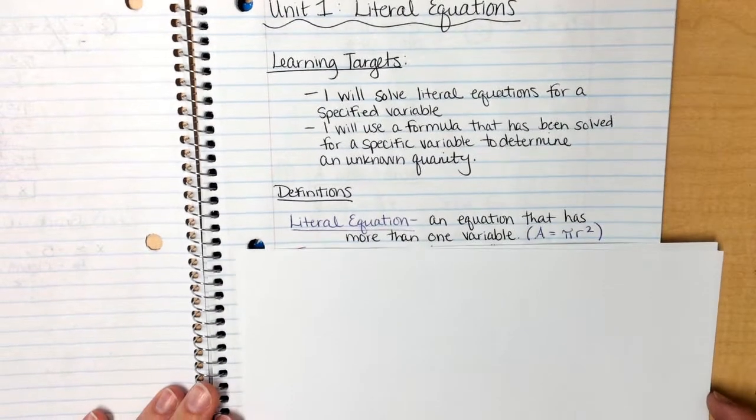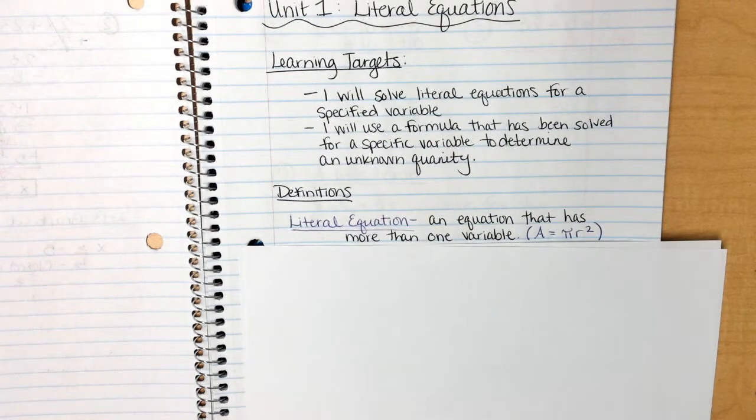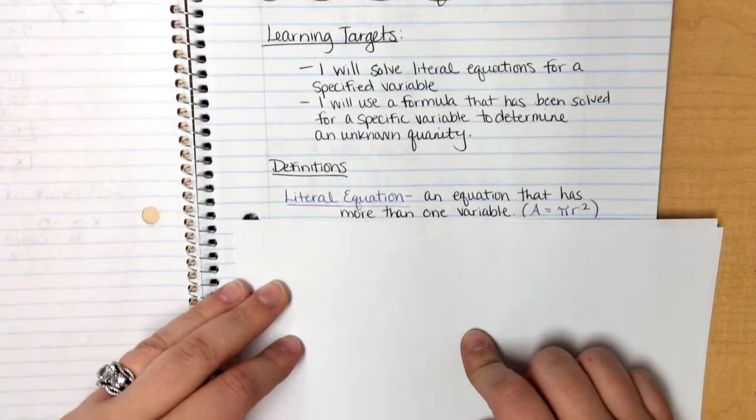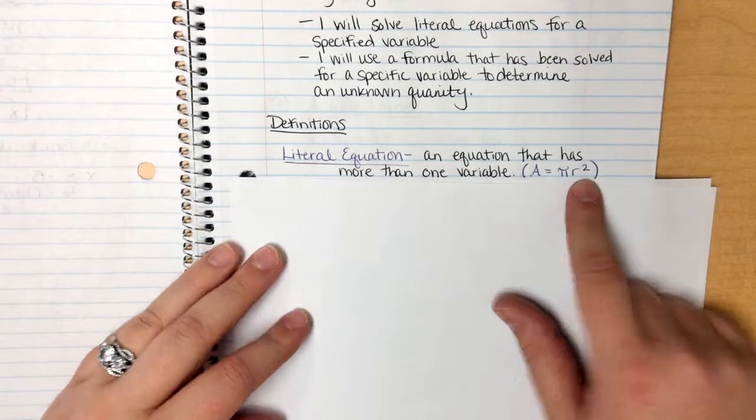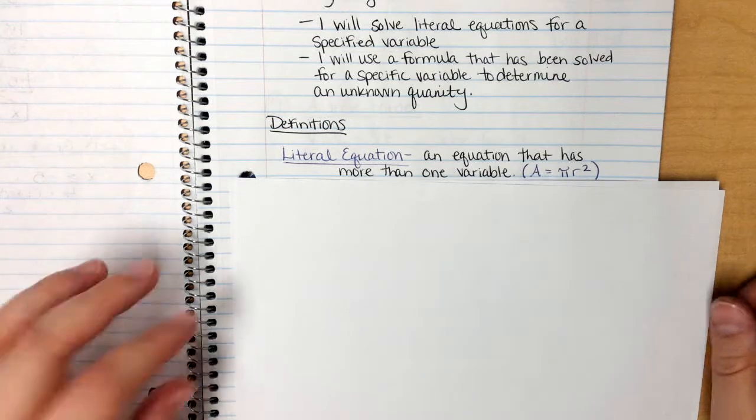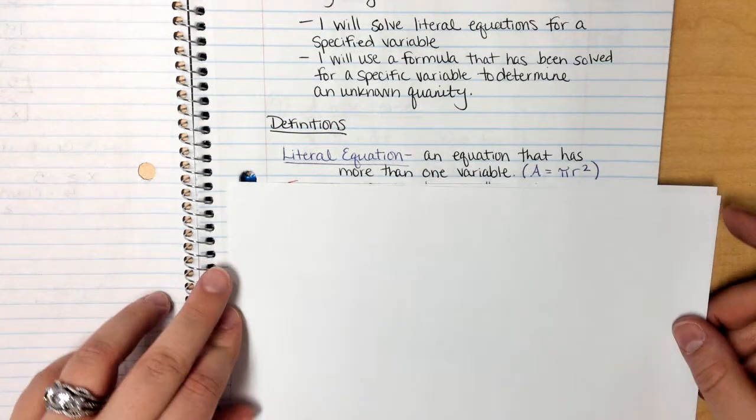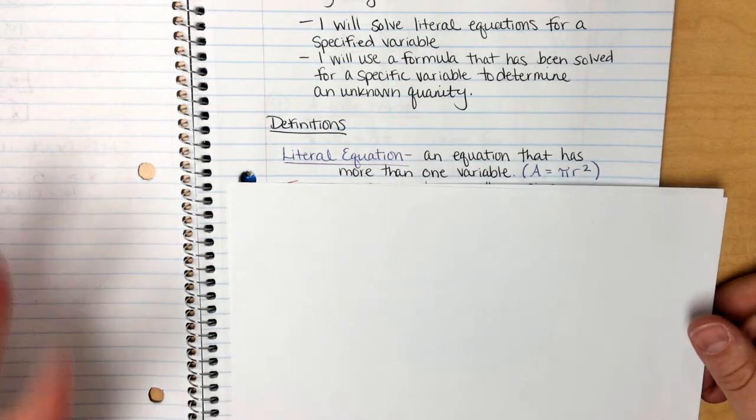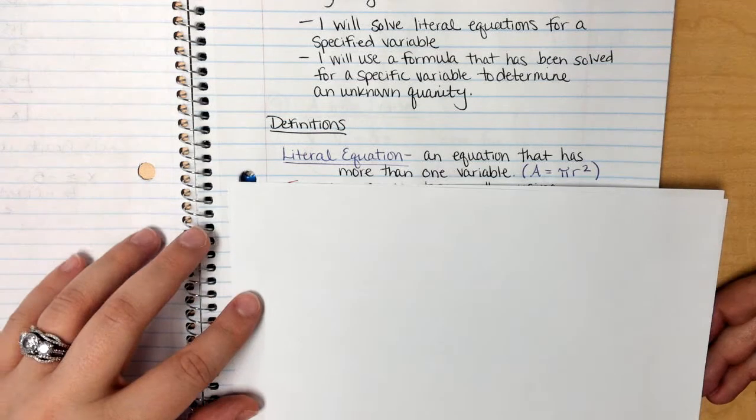So my definitions, what is a literal equation? A literal equation is an equation that has more than one variable. There are tons of equations that have more than one variable, but an example that I picked is A equals pi r squared, which means the area of a circle is equal to pi times your radius squared.